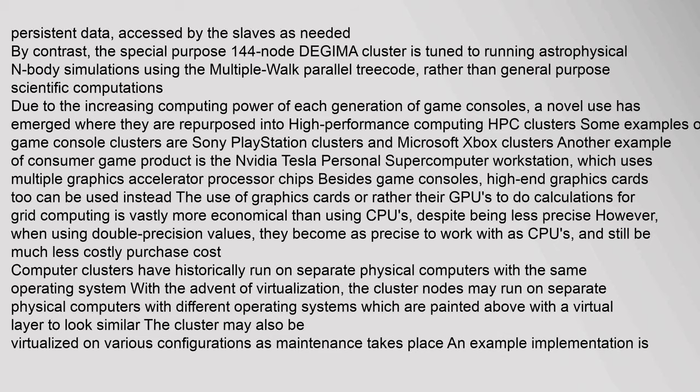The private slave network may also have a large shared file server that stores global persistent data accessed by the slaves as needed. By contrast, the special-purpose 144-node DEGIMA cluster is tuned to running astrophysical N-body simulations using the multiple-walk parallel treecode rather than general-purpose scientific computations. Due to the increasing computing power of each generation of game consoles, a novel use has emerged where they are repurposed into high-performance computing (HPC) clusters. Examples include Sony PlayStation clusters and Microsoft Xbox clusters. Another example is the NVIDIA Tesla personal supercomputer workstation, which uses multiple graphics accelerator processor chips.